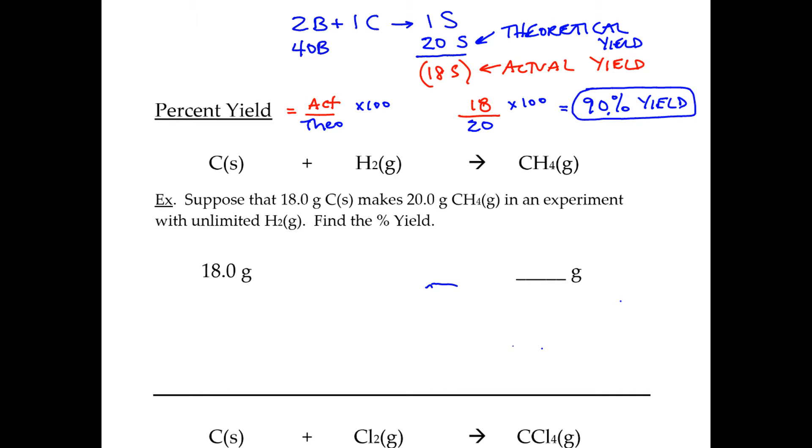So it's what you got over what you were supposed to get. So you always have to figure out both numbers and then divide them. So let's take a look at this problem.